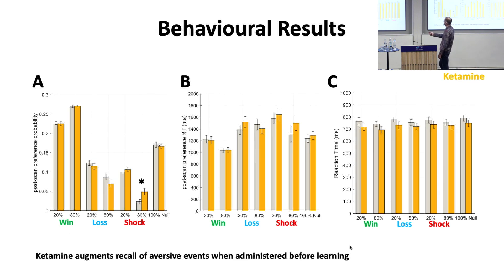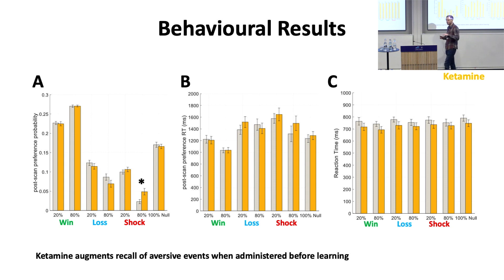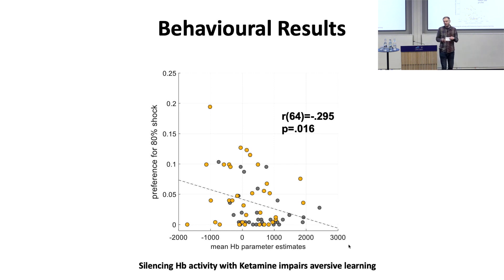Inside the scanner, the ketamine group displayed a slight pro-cognitive effect in that they were quicker to respond to the flickers, though this was not significantly different between groups. Outside the scanner in the preference test, the ketamine group displayed a stronger preference for the 80% shock shapes — the most aversive stimuli — while their reaction times in the preference test were comparable. Because the behavioral results and habenula signal displayed a similar pattern, we conducted a correlation analysis, which revealed a negative correlation: the higher the habenula response, the lower the preference for the 80% shock shapes.